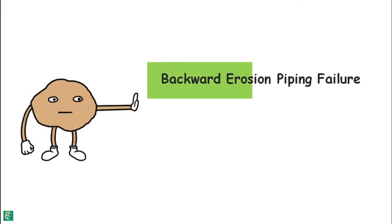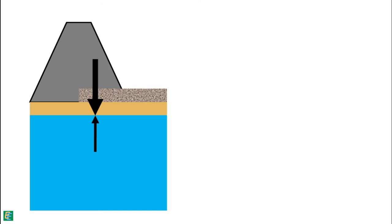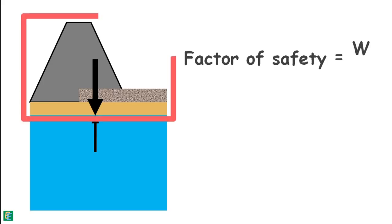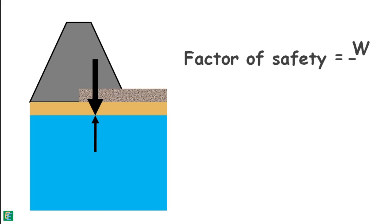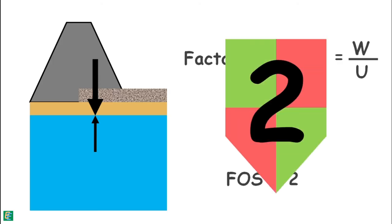To prevent backward erosion piping or heave piping failure, the upward seepage force exerted by water on the soil particles should be less than the downward force due to the weight of the soil, structure, or any other arrangement. The factor of safety against piping can be written as the downward force — weight of everything above — divided by the upward seepage force. If the downward force is twice the upward force, the factor of safety is 2, meaning the structure is twice as safe.